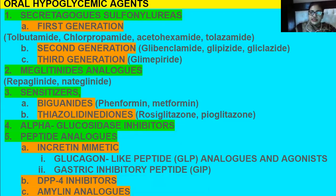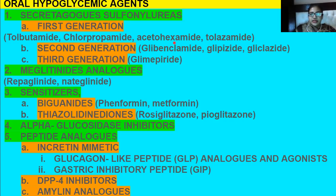Secretagogues, as the name suggests, they are secreting insulin. We have three generations of them. The first generation includes tolbutamide, chlorpropamide, acetohexamide, and tolazamide. The second generation is glibenclamide, glipizide, and gliclazide.